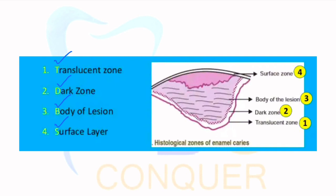Most of you are preparing for INICET too. INICET is going to ask a sequence-based question — they can ask you the sequence of histological enamel zones from inside to outside or from outside to inside. Sometimes they may link it with a diagram. No need for complicated diagrams, even for a university exam in MDS first year or third BDS. You can go with a simple diagram with different color coding. From inside to outside, it is TDBS.